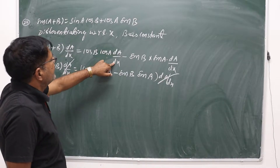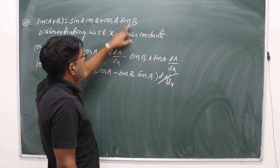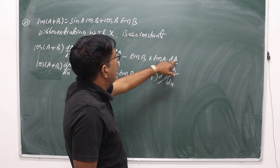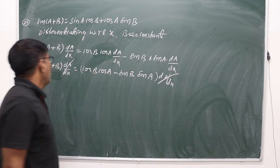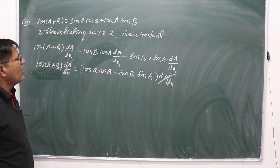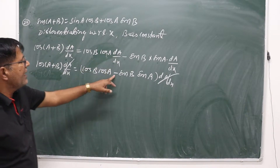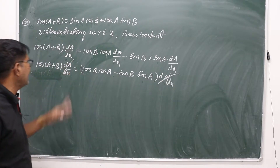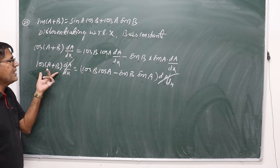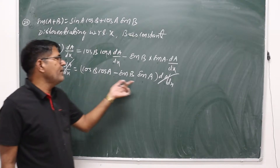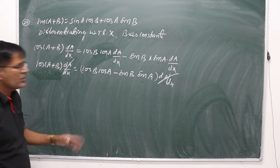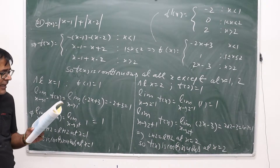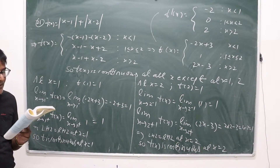Continuing the right-hand side: sin b is constant, so the derivative of cos a gives -sin a · da/dx. Taking da/dx common on the right side: cos b · cos a - sin b · sin a, multiplied by da/dx. The da/dx cancels from both sides, giving us: cos(a+b) = cos a cos b - sin a sin b.